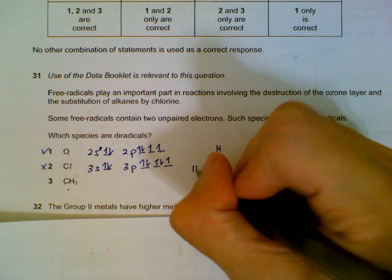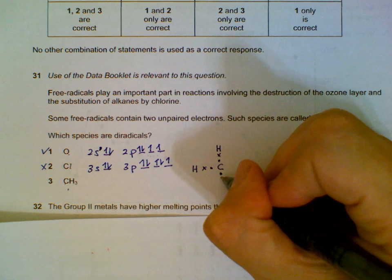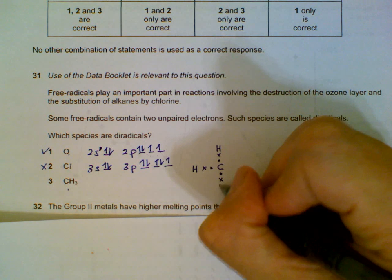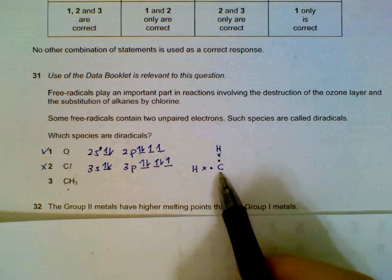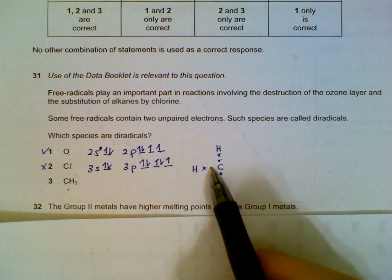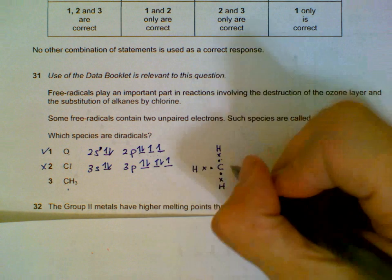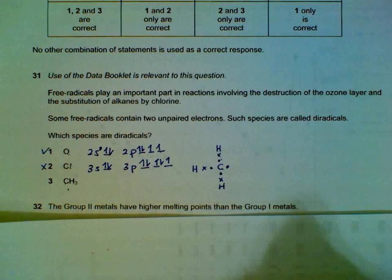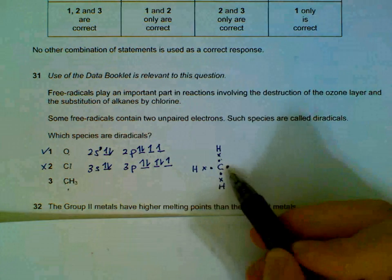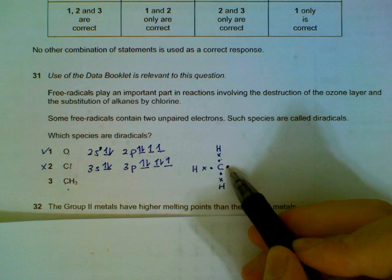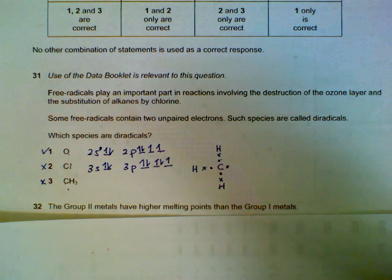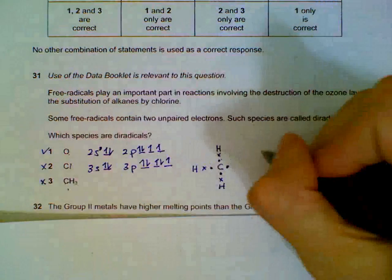Carbon - one, two, three - uses three of its outer electrons. There's four outer electrons for carbon, which is unused, so it only has one unpaired electron. So the answer is statement one only.